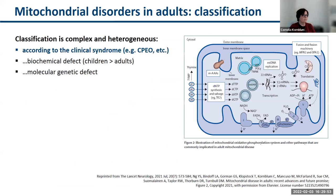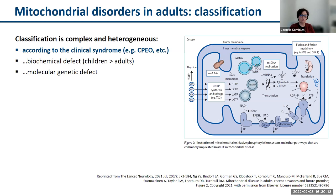The classification of mitochondrial disorders in adulthood is very complex and heterogeneous. You can classify according to clinical syndrome, biochemical defect, or molecular genetic defect. At the molecular level, we see pathogenic mitochondrial DNA variants — usually maternally inherited or appearing sporadic — and pathogenic nuclear DNA sequence variants, a group of diseases that is really expanding. There are more than 1,700 mitochondrial proteins and many may be affected due to genetic defects, following Mendelian inheritance patterns or sometimes appearing sporadic.